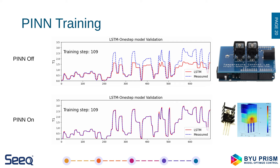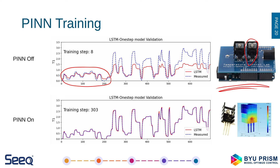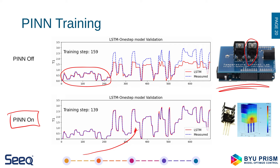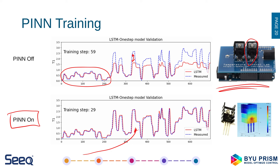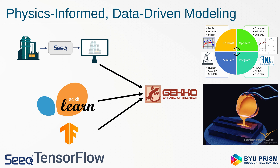Looking at the results using the temperature control lab device — specifically on heater one — you can see the training on smaller steps. With the physics-based information, shown on the lower plot, the model trains more quickly and requires less data. The convergence is much faster. Without physics-based constraints, you can see the model trying to reduce error but requiring much more training to achieve the same result.